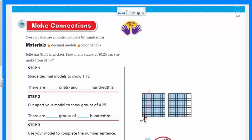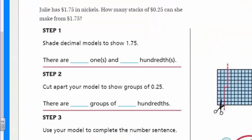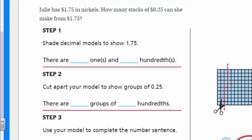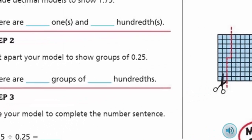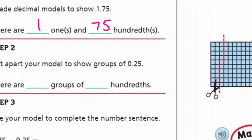Making some connections — hands on. Here we have our decimal models again. You can also use a model to divide by hundredths — not just the tenths, but by hundredths. Materials: decimal models, coloring pencils. Julie has one and seventy-five cents in nickels. How many stacks of twenty-five cents can she make from one and seventy-five cents? Step one: shade decimal models to show one and seventy-five hundredths. So there is one whole and then seventy-five hundredths shaded.